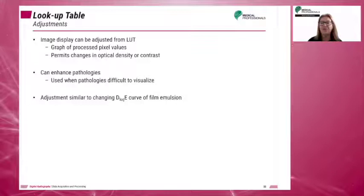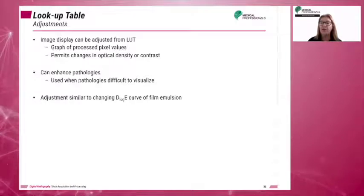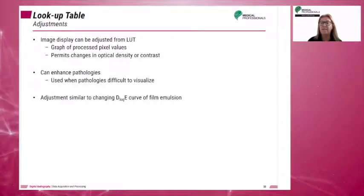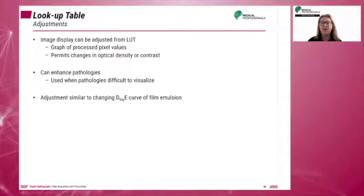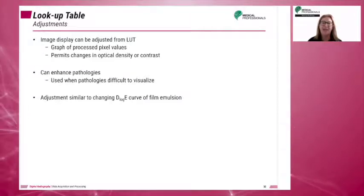In conventional film screen imaging, MAS controlled density and KVP controlled contrast. The film responded in a non-linear way. If MAS was too high or too low, the optical density values would either fall in the shoulder of the H&D curve — too dark — or in the area of the toe — too light — making them indistinguishable from each other. With digital imaging, the response to exposure is linear, so the system is capable of displaying many more shades of gray. The lookup table is also primarily responsible for image contrast as displayed on the monitor.